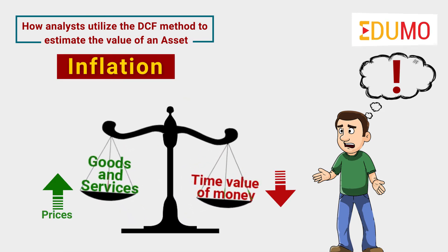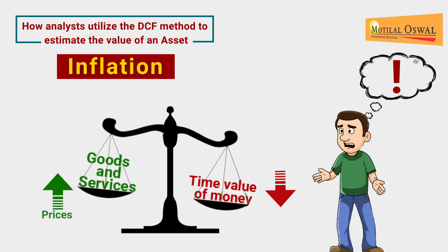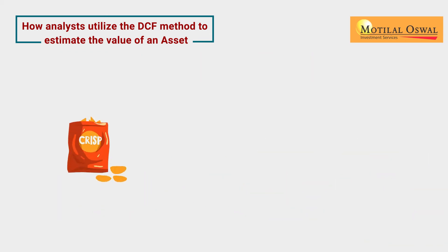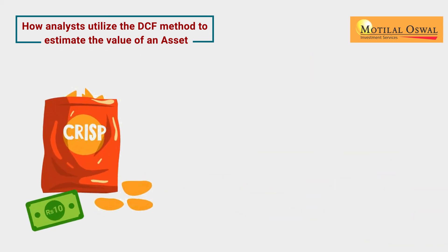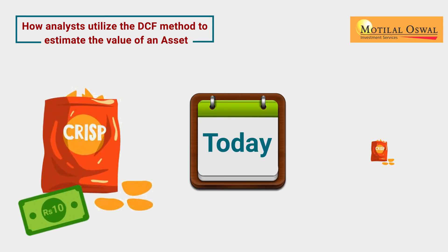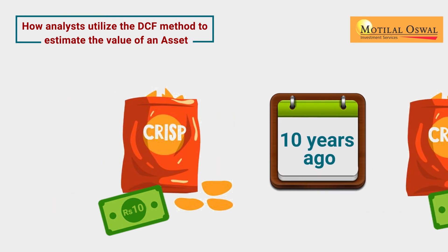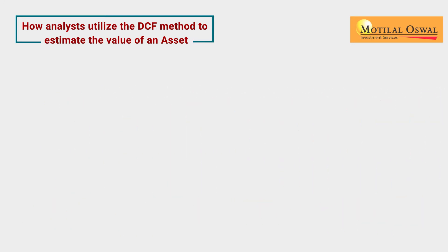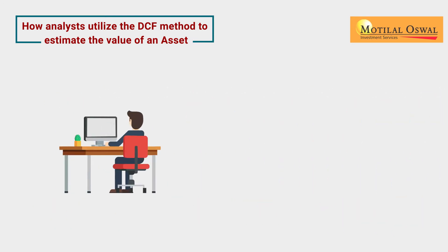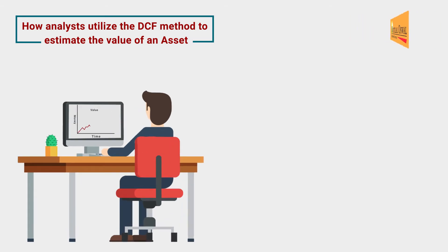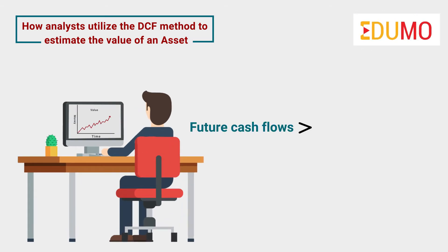The key reason is inflation — the general rise in prices of goods and services over time. A bag of chips goes for rupees 10 today, but the same amount of chips would sell for rupees 5 ten years ago. Investors can use this concept of time value of money to determine if future cash flows are greater than the value of the asset.